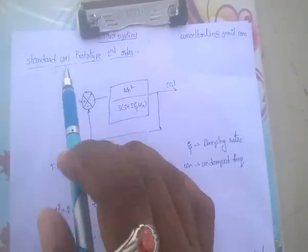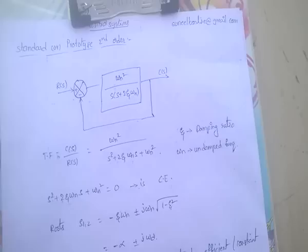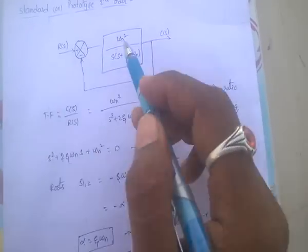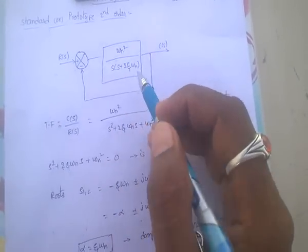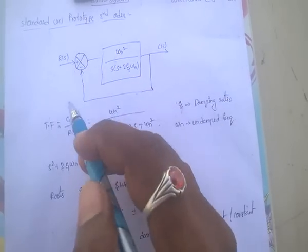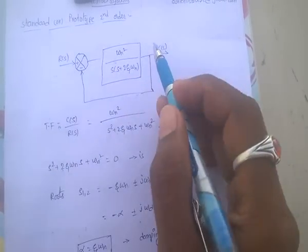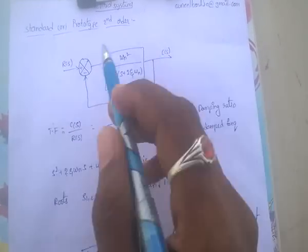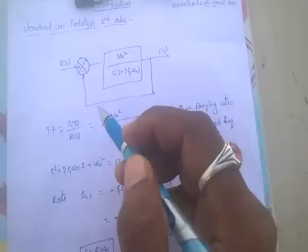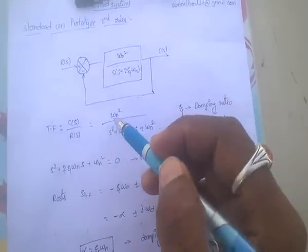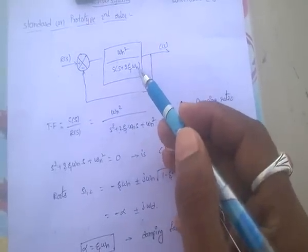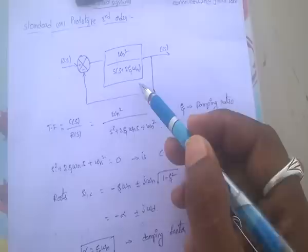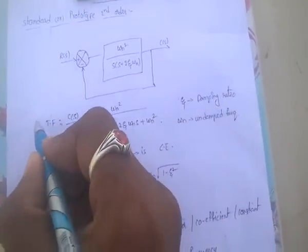Here, standard second order system. It is an open loop transfer function. Coming to the closed loop transfer function, transfer function equals output by input, that is C(s) by R(s), which is nothing but ωn² divided by s² + 2ζωns + ωn². This is the closed loop transfer function.